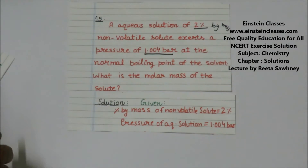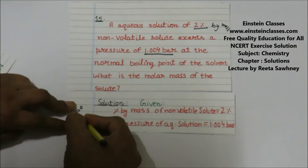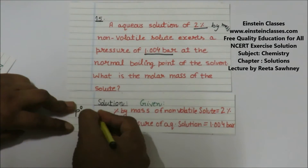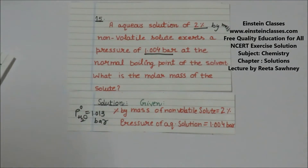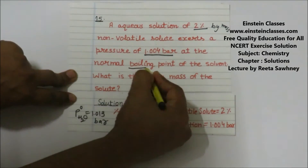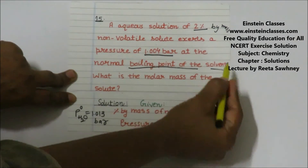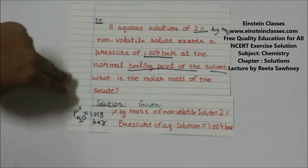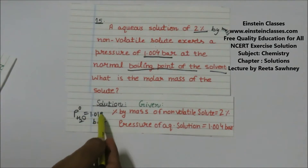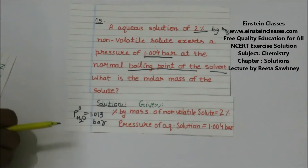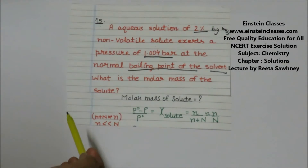This means that the vapor pressure of pure water, P₀, at the normal boiling point is 1.013 bar. The vapor pressure of the aqueous solution, 1.004 bar, is given to us at the boiling point of the solvent, so at the boiling point of the solvent the vapor pressure of pure water is 1.013 bar.